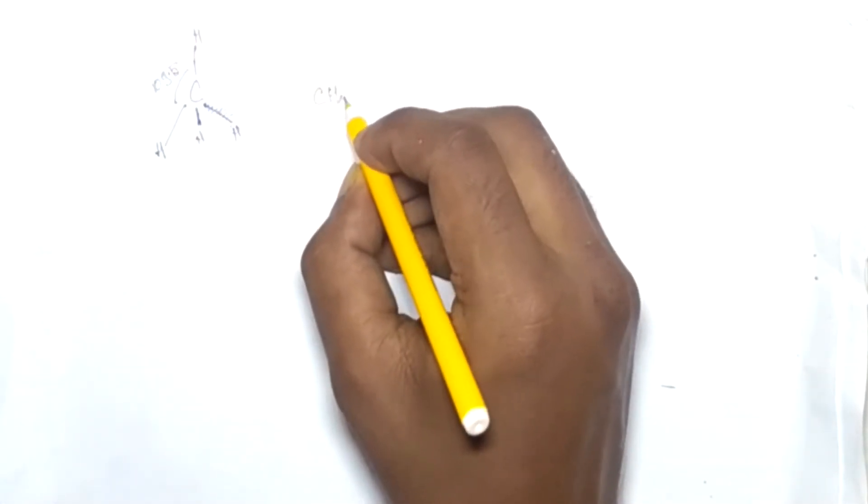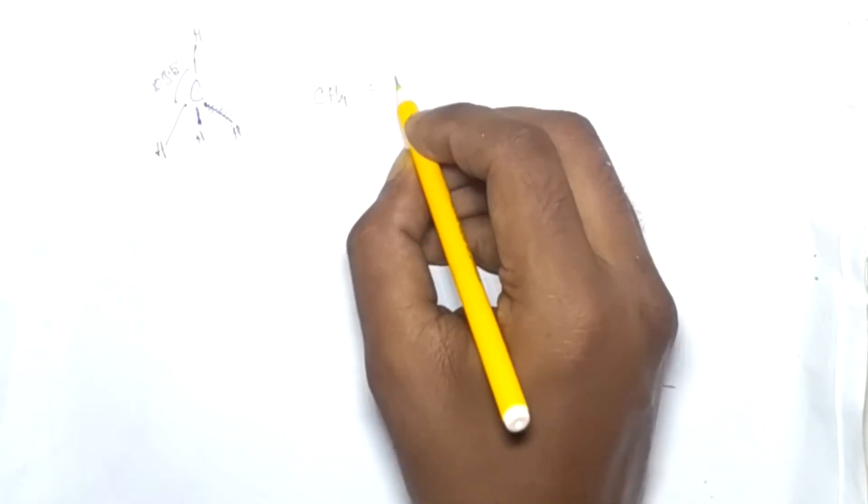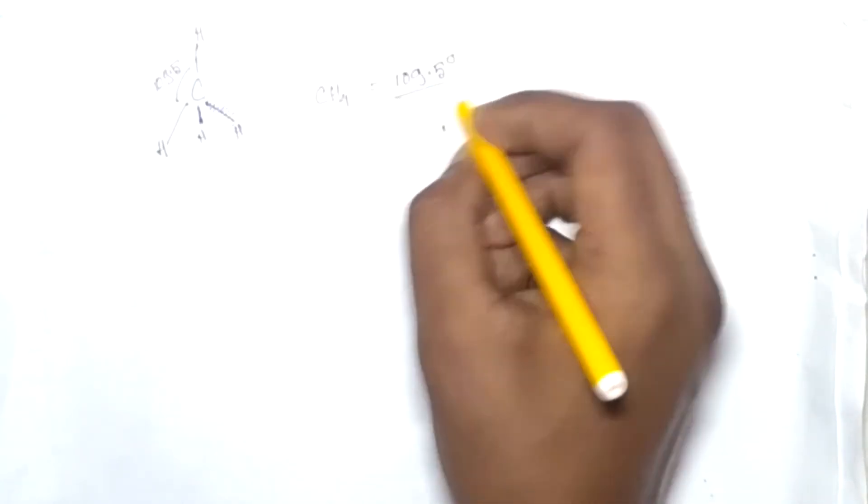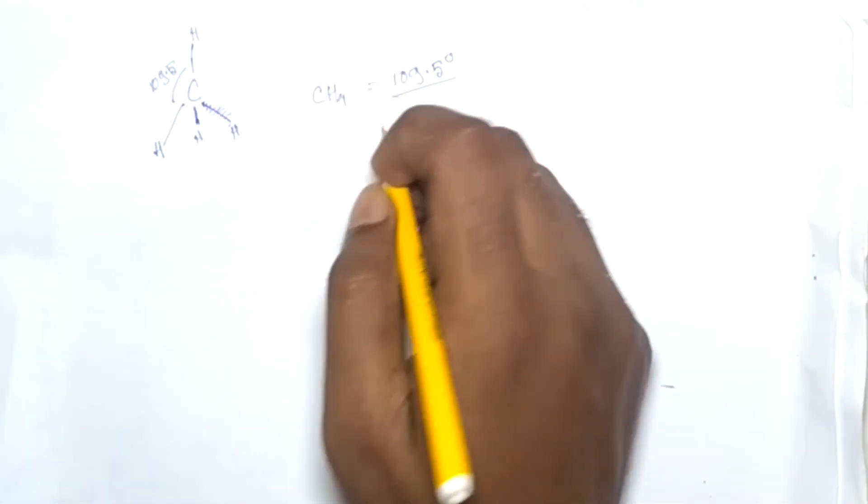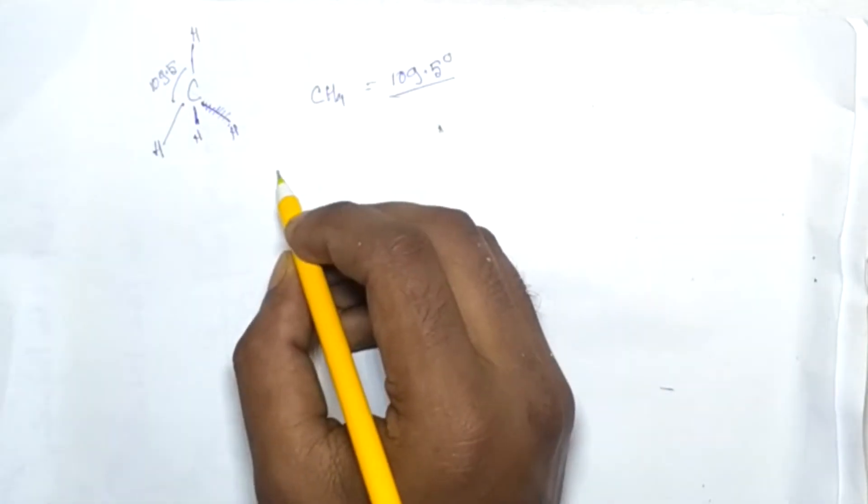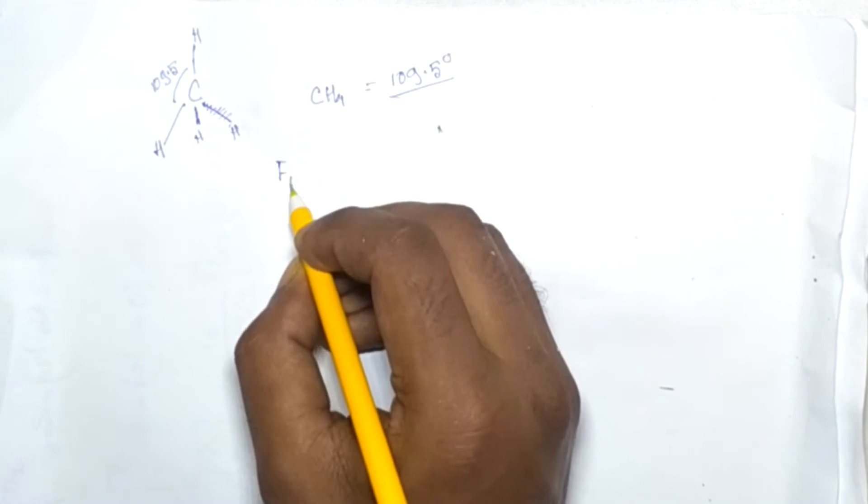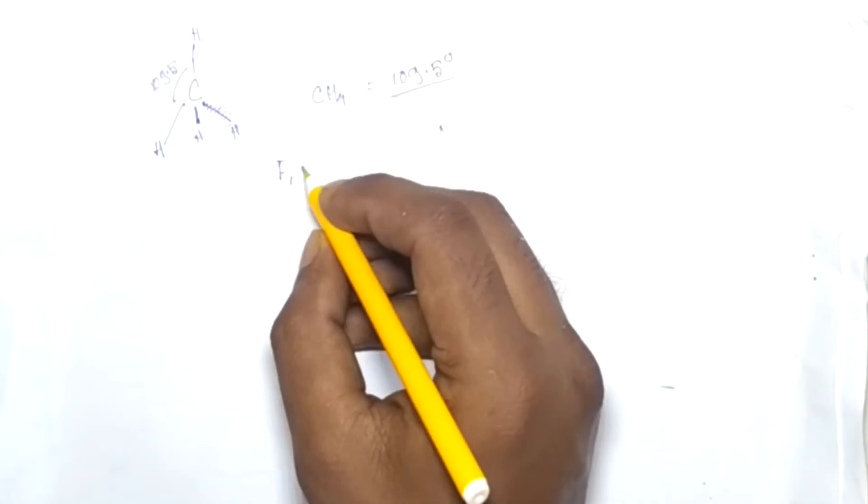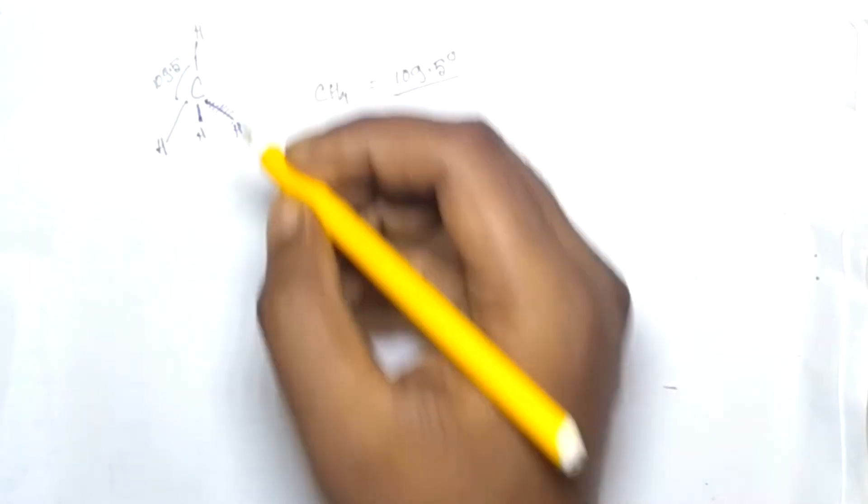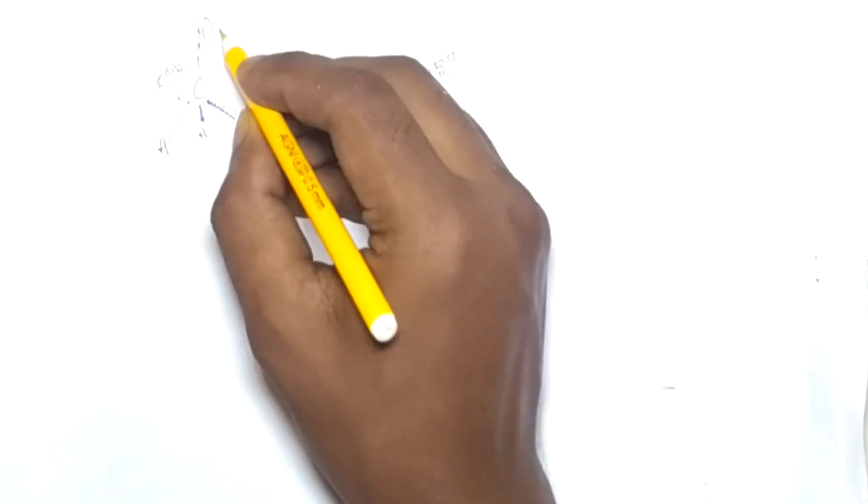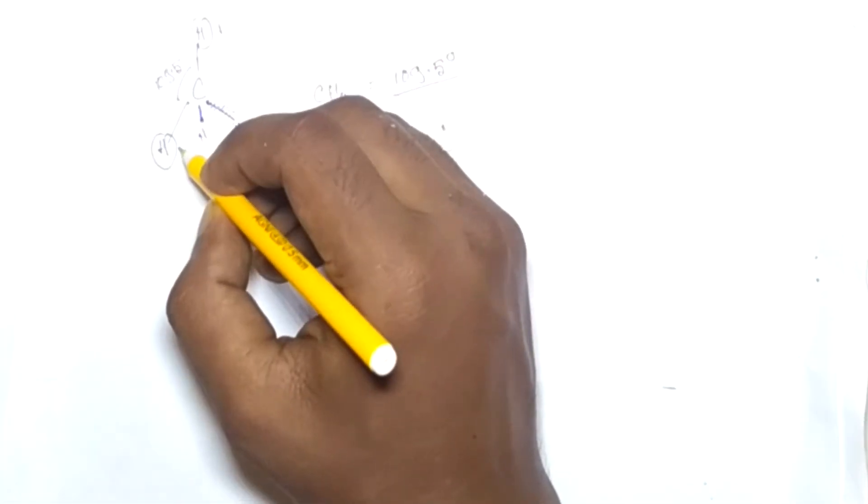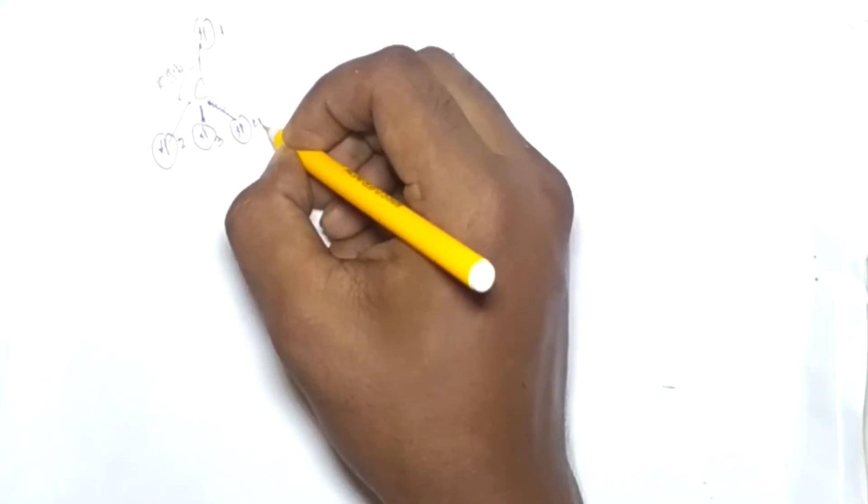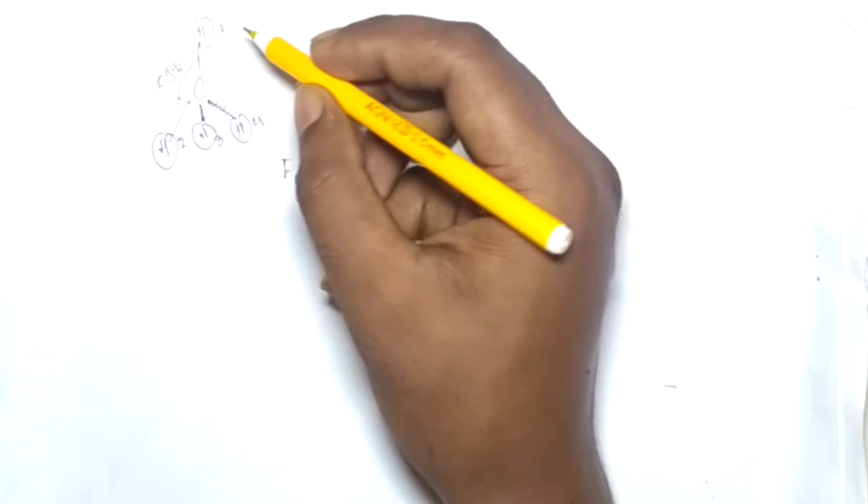That means that we take the forces between C and H as F1. This is H1 and this is H2, this is H3 and this is H4. So I'm naming it CH1, H2, H3, H4. So I'm just giving the name basically.